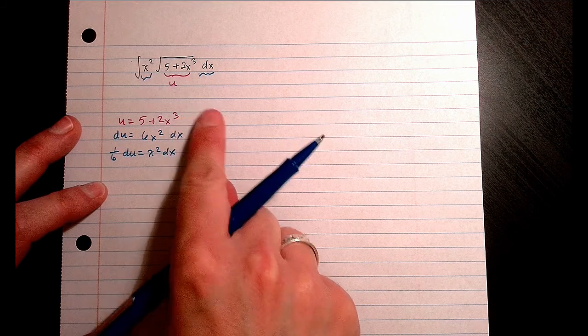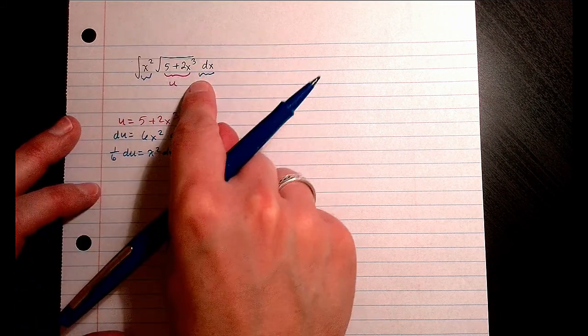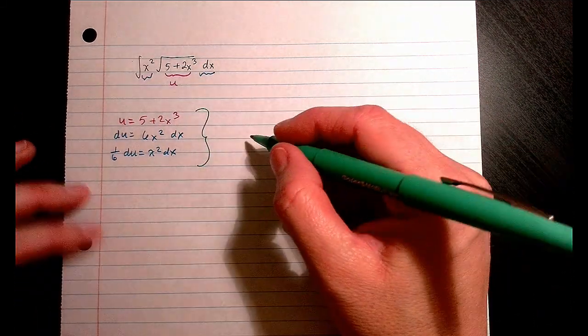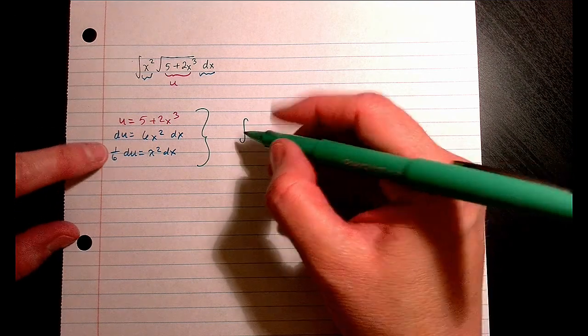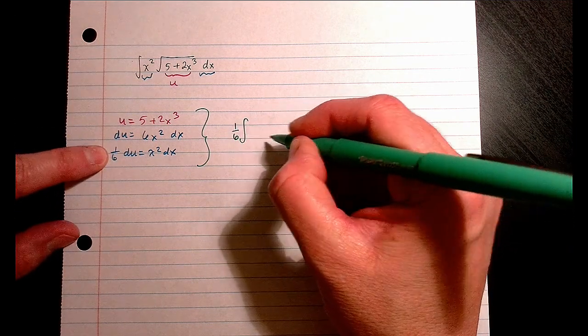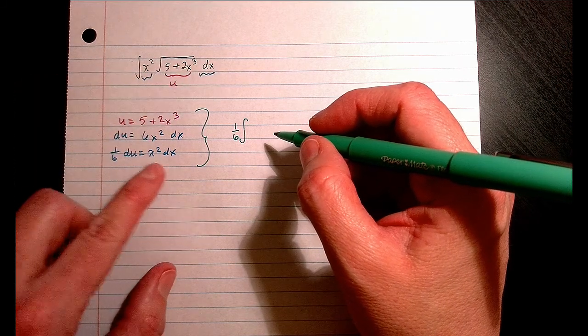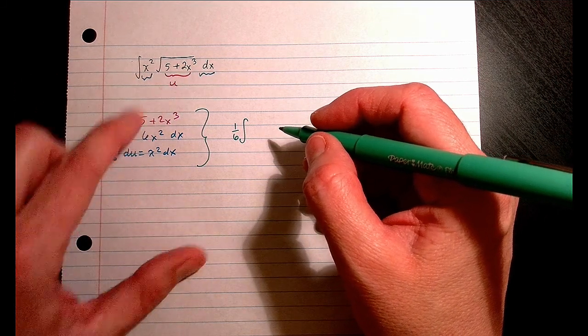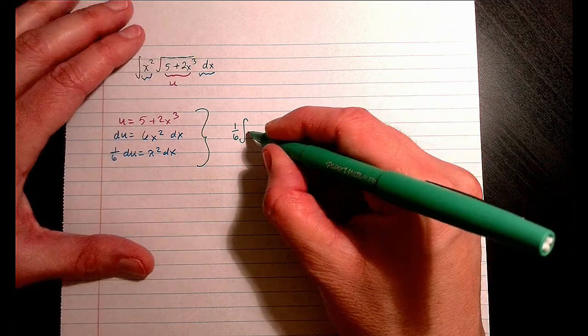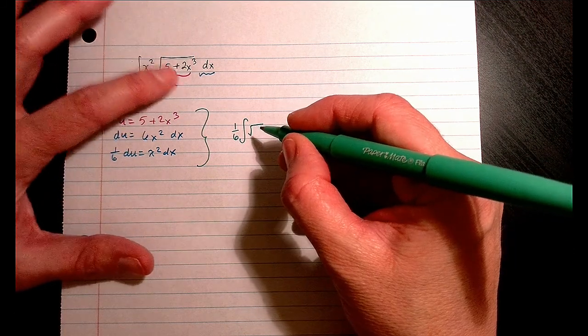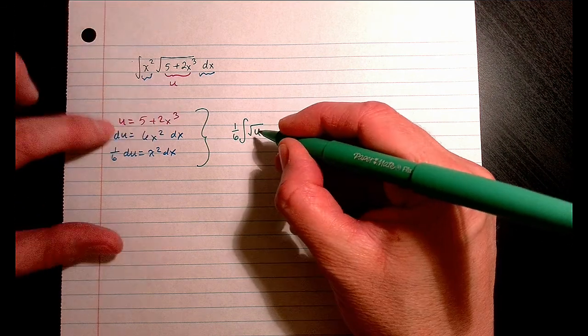Now, see how I have a 1/6 du? Just take that and put it out front in the beginning. It makes it a little easier. So the x squared dx is getting absorbed into the du, and this entire expression is going under a radical. So it's no longer 5 plus 2x cubed. It's just a simple u.